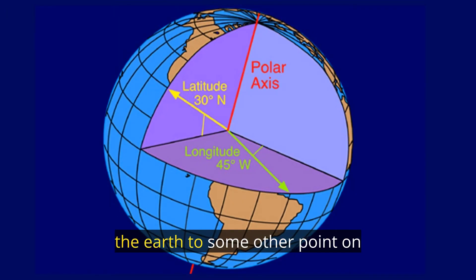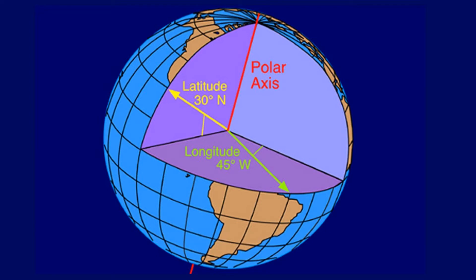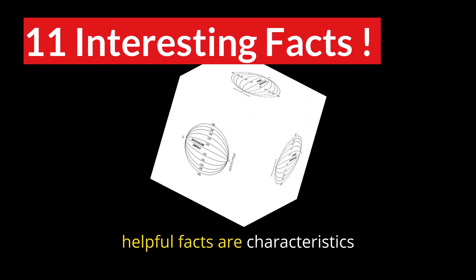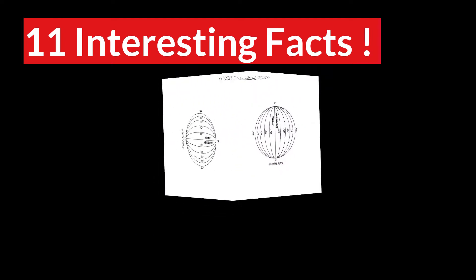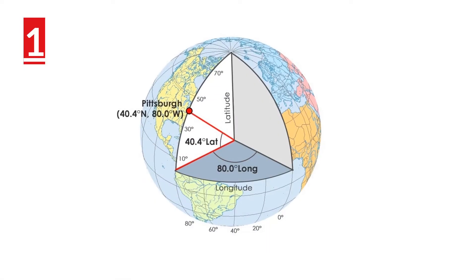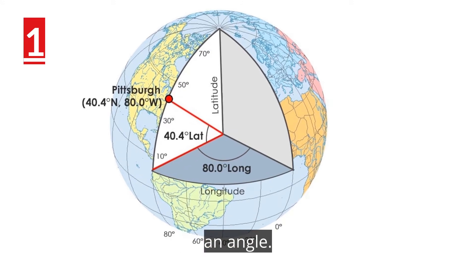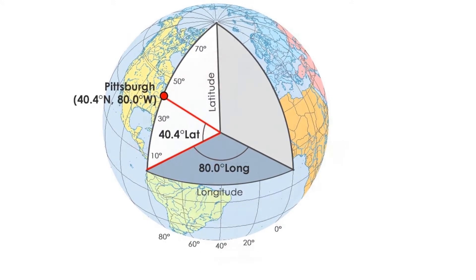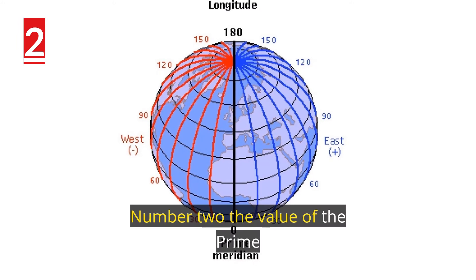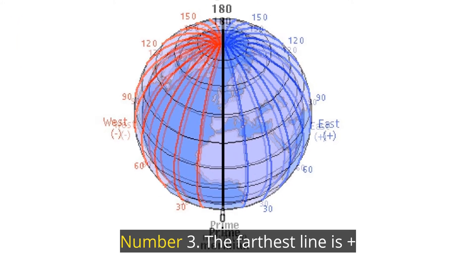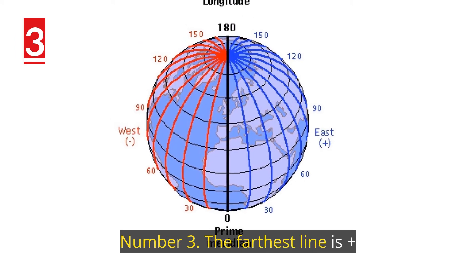Here are 11 interesting and helpful facts or characteristics of longitudinal lines. Number one: longitudinal lines are measured using degrees, exactly the same as an angle. Number two: the value of the Prime Meridian is zero degrees.